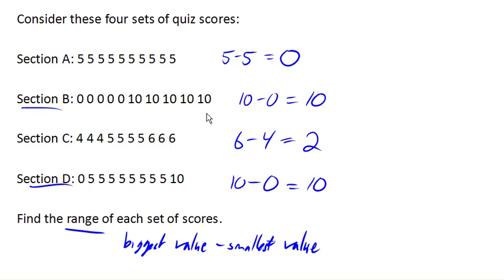You know, this set, half the class failed and half the class got perfect, whereas in this class, we had one failure, one perfect score, and a lot of people right in the middle.